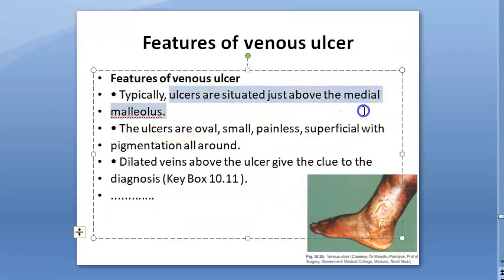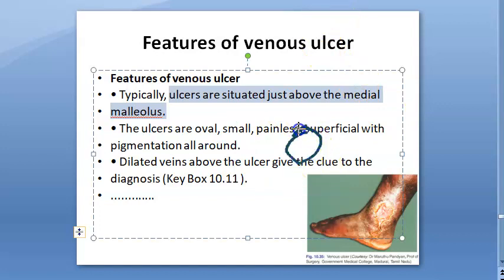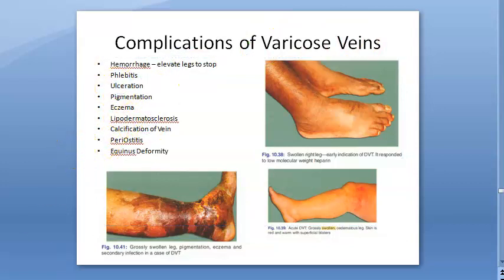Typically they are situated above the medial malleolus, related to the great saphenous vein. These ulcers are oval, small, painless, superficial, and with pigmentation all around. This pigment will be hemosiderin deposits because of venous stasis — blood stasis.